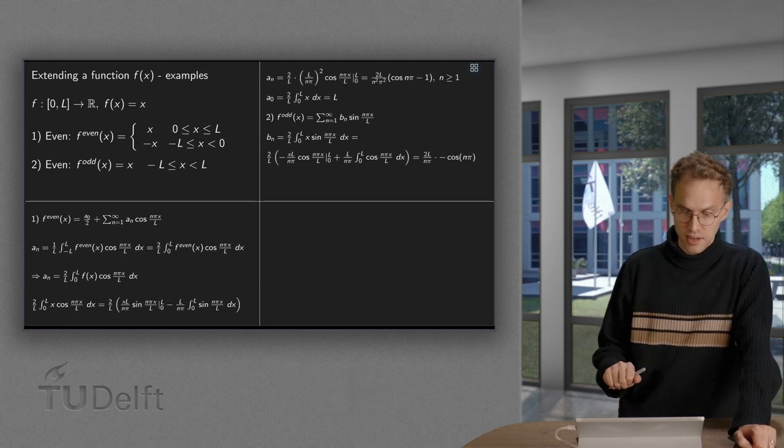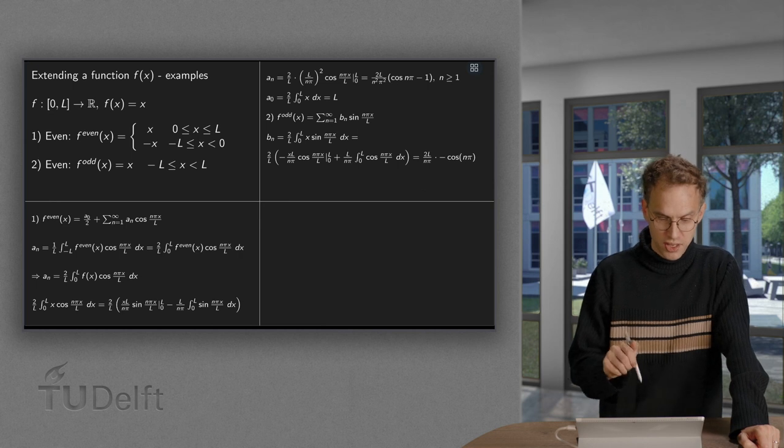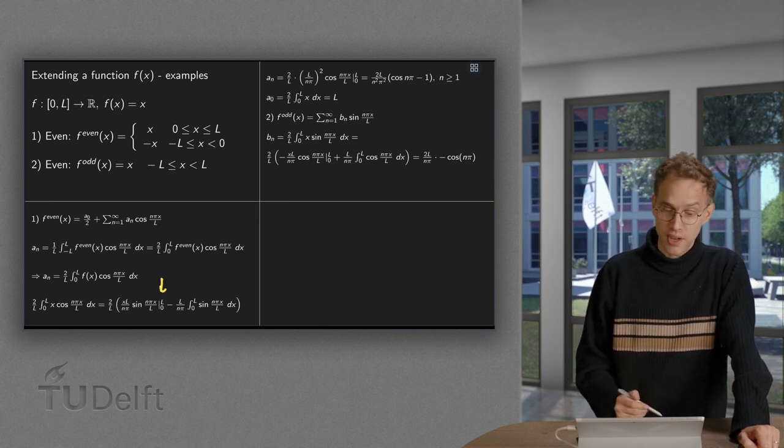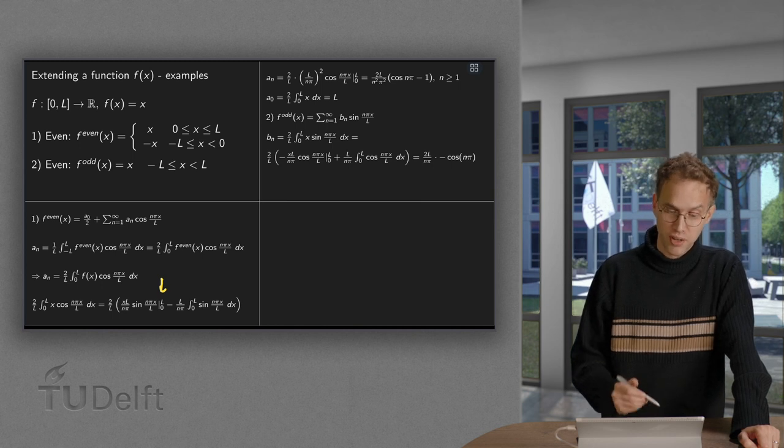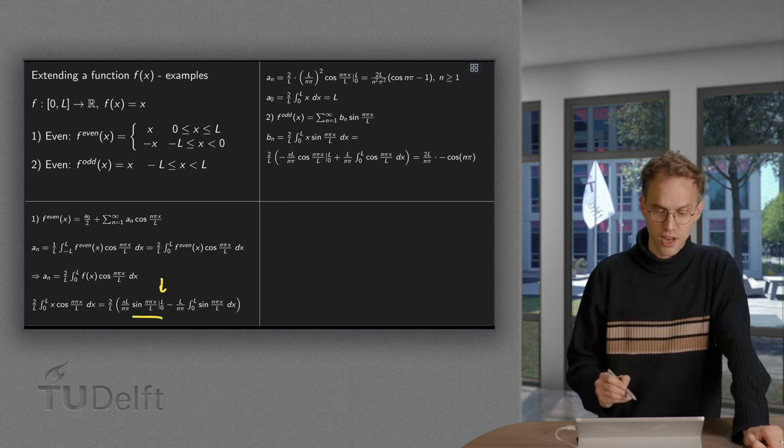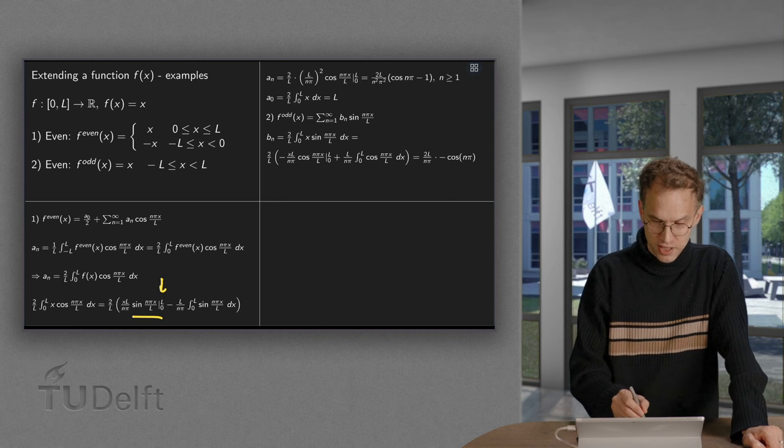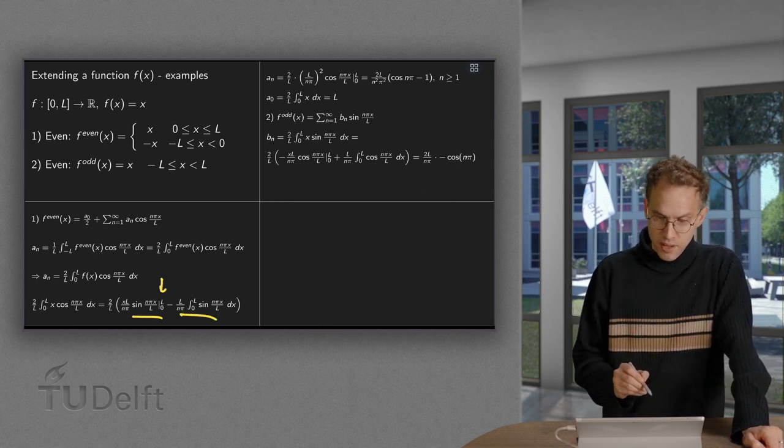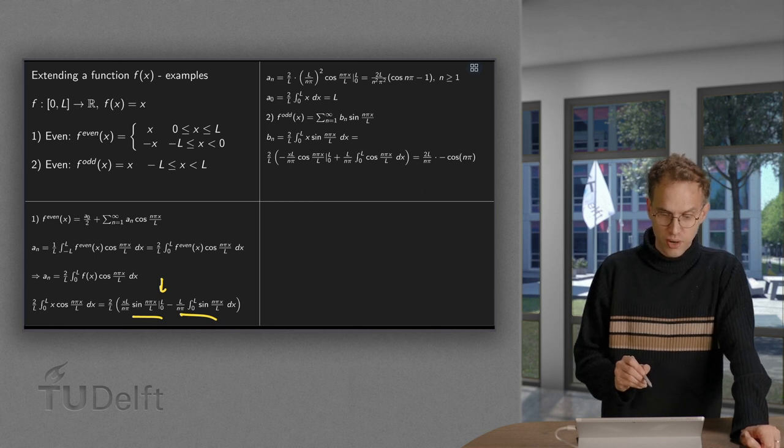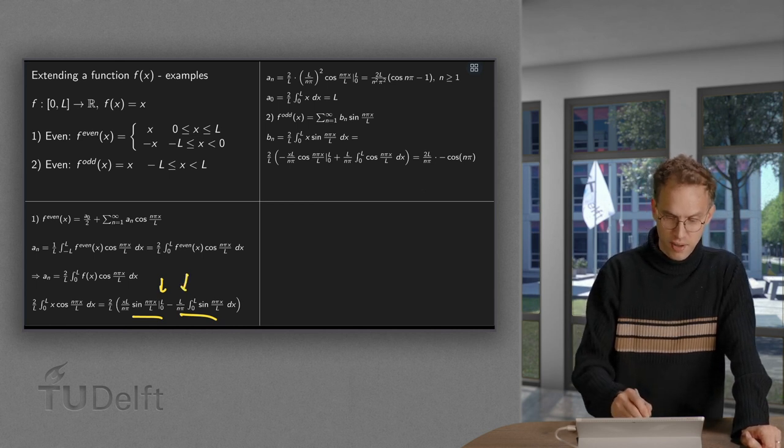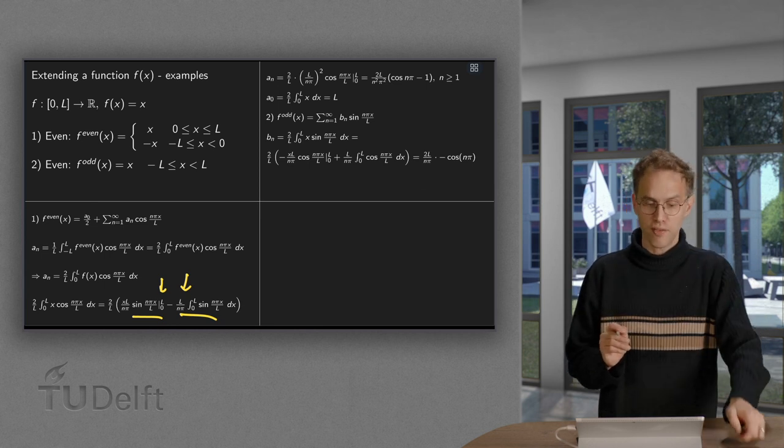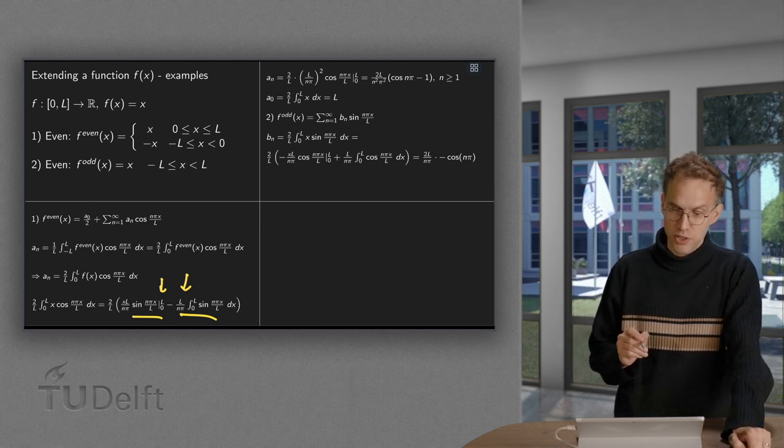And then we see that these terms all yield sine n pi equals 0, or sine of 0 equals 0, so all those terms cancel out. So we are left with this second integral. We had a 2 over l, we had an l over n pi. When we integrate the sine n pi x over l, we get another l over n pi, and then cosine.